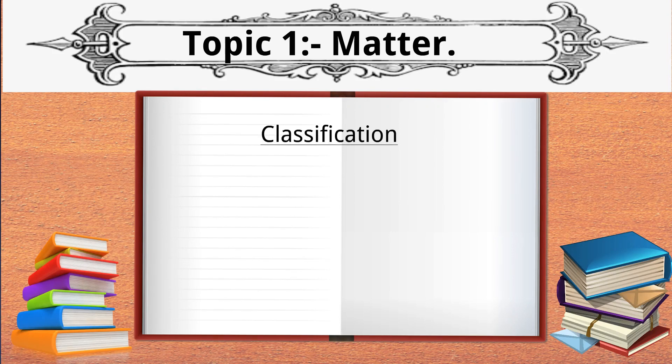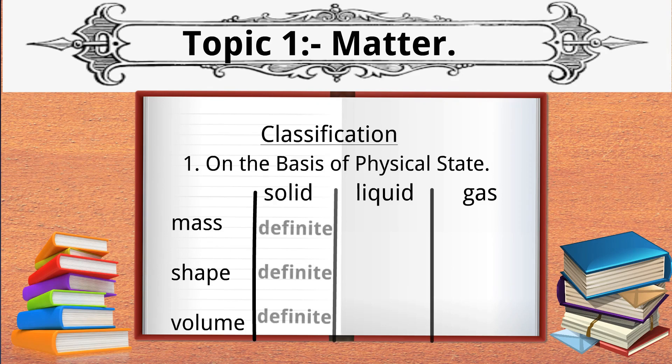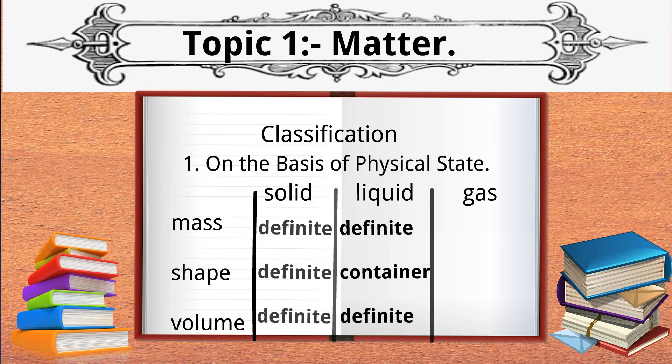Let's see the classification of matter on the basis of physical state. Matter can be classified in three states: solid, liquid, and gas. The main difference in properties between these states are: solids have definite mass, definite volume, and definite shape. Liquids have definite mass and volume but take the shape of the container. Gases have definite mass but occupy the volume of the container and also take the shape of the container.